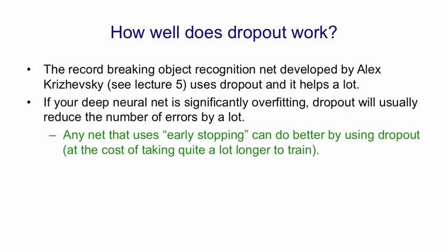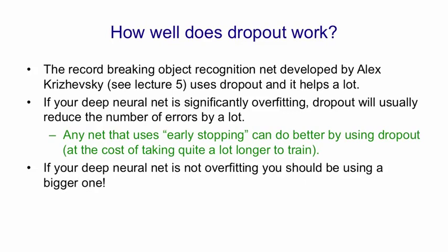It would, of course, take longer to train, and it might need more hidden units. If you've got a deep neural net and it's not overfitting, you should probably be using a bigger one and using dropout. That's assuming you have enough computational power.